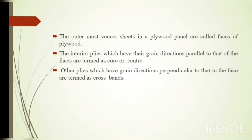The outermost veneer sheets in plywood are called faces of plywood. The interior plies which have their grain directions parallel to that of the face are termed as core. Other plies which have their grains perpendicular to that of the face are termed as cross bands.